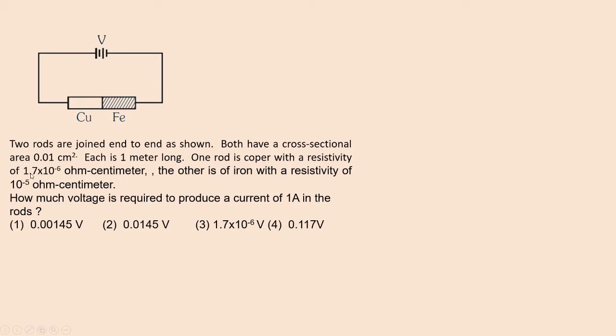One rod is copper with a resistivity of 1.7×10⁻⁶ ohm-centimeter. The other is of iron with a resistivity of 10⁻⁵ ohm-centimeter. How much voltage is required to produce a current of 1 ampere in the rods?